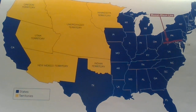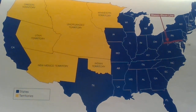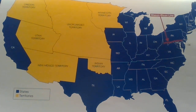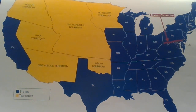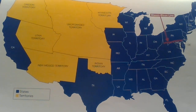The Mason-Dixon Line is an imaginary line between the border of Pennsylvania and Maryland. It was named after two Englishmen, Charles Mason and Jeremiah Dixon, who surveyed this land almost 100 years earlier. The Mason-Dixon Line became an imaginary line between the North and the South. Slavery was allowed in the South, below the Mason-Dixon Line, but slavery was not allowed in the North, above the Mason-Dixon Line.